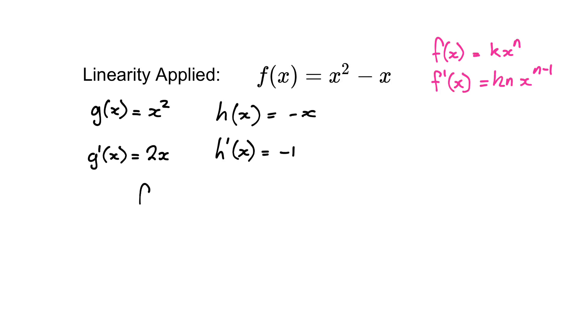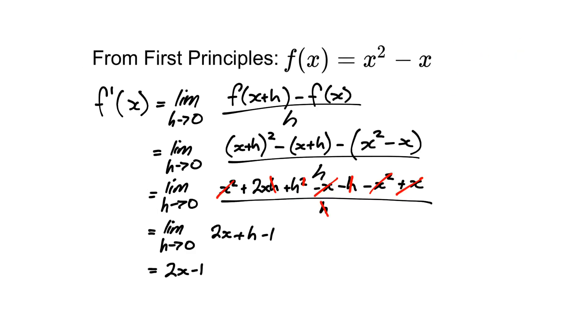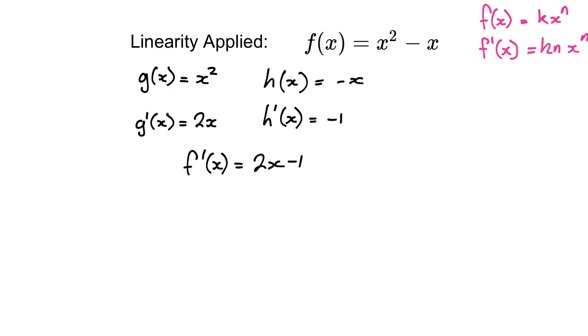Combining these two values together to give us f prime of x is equal to 2x minus 1, which agrees with our value from the previous slide of 2x minus 1 when we solved it from first principles. This means that you can solve even more complex problems than this just by breaking them up into their components.